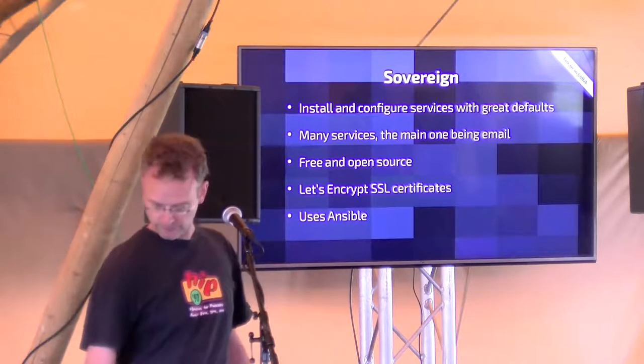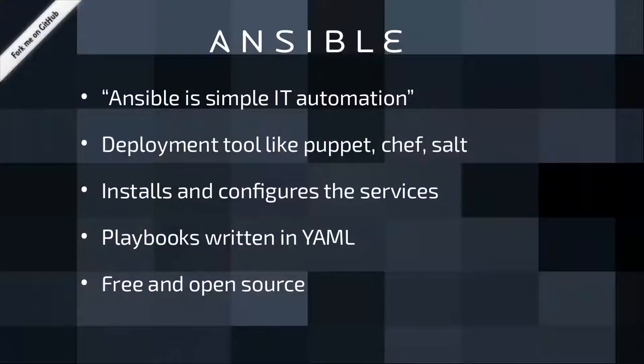Sovereign uses Ansible, which is an open source project currently maintained by Red Hat. The scripts for Ansible are called Playbooks, and they're written in YAML — it's actually really easy to understand, human readable, uses indentation. It's very straightforward and easy to pick up. I didn't know YAML at all before I joined this project, so just have a look at the files — it should be fairly self-explanatory.